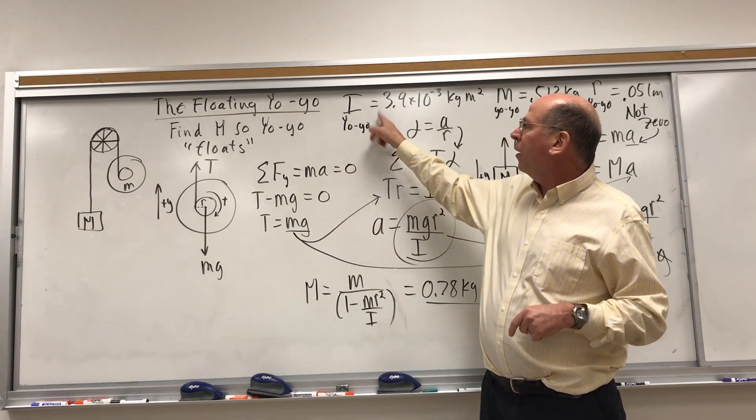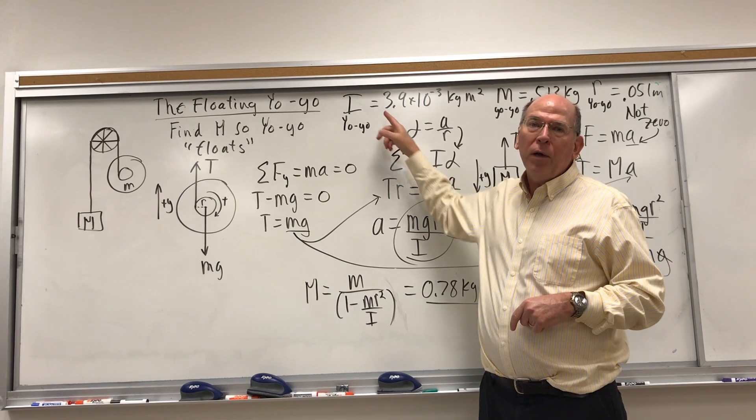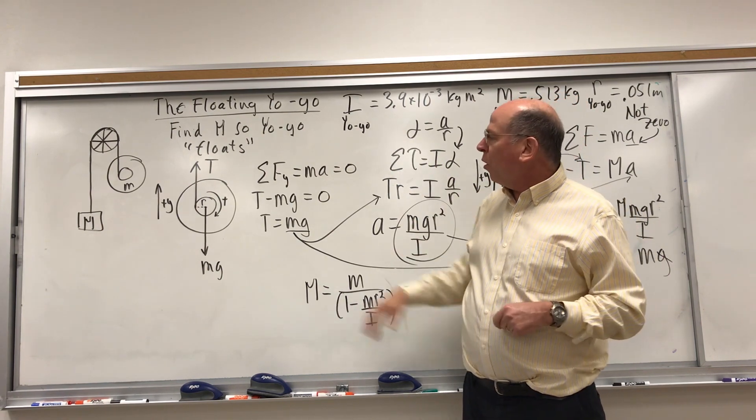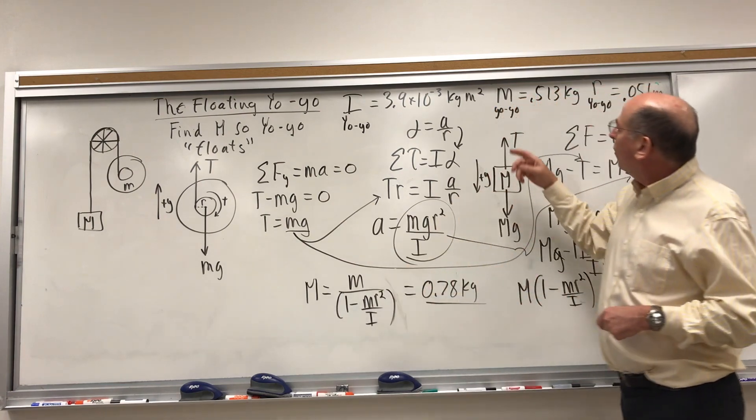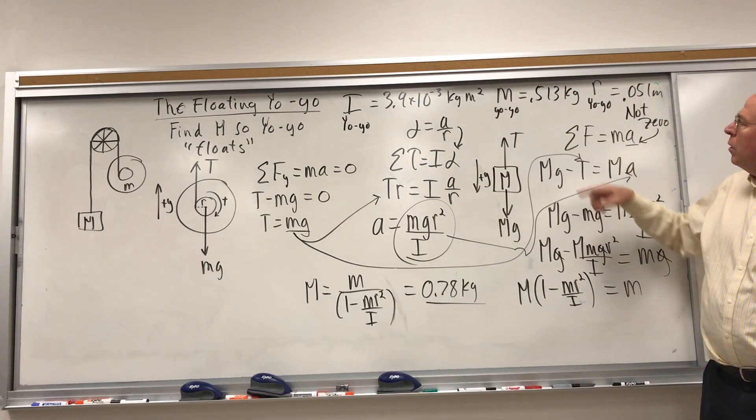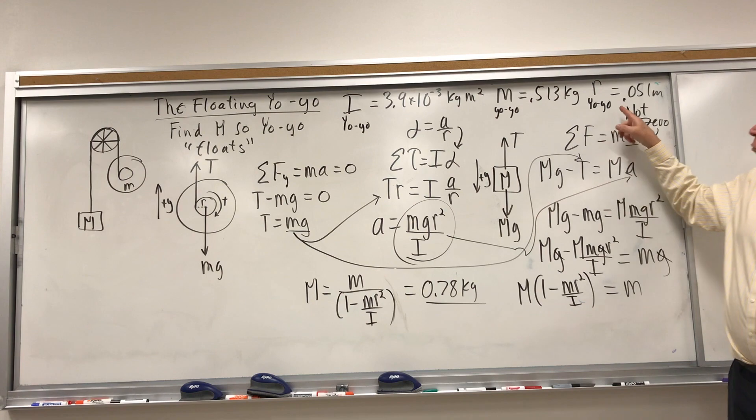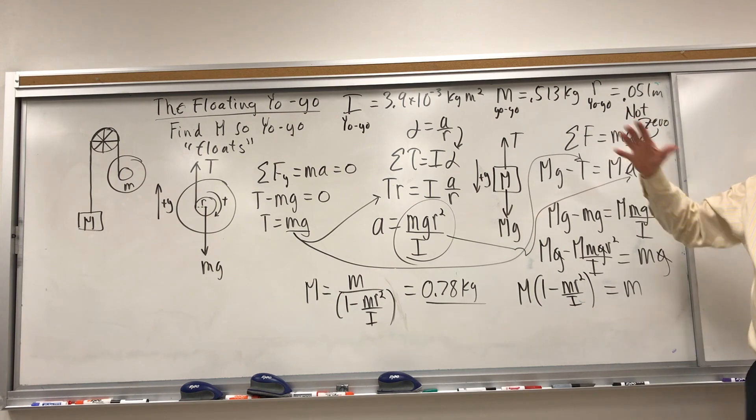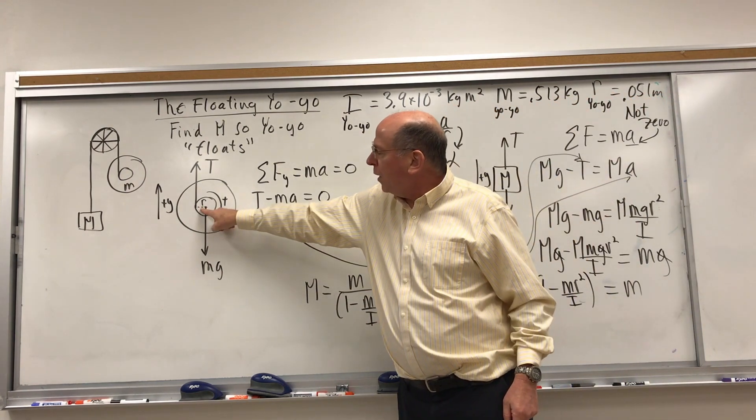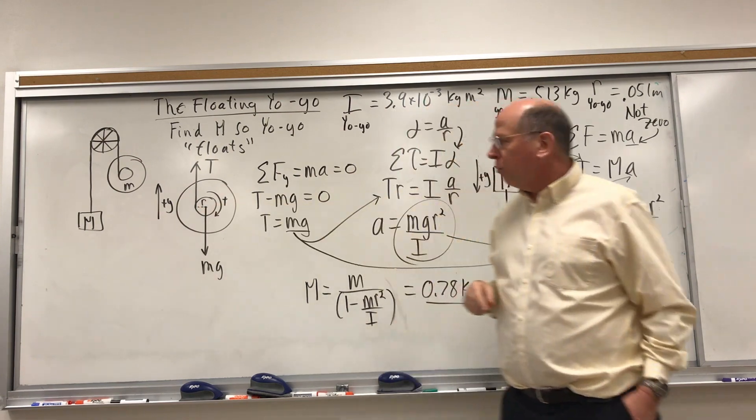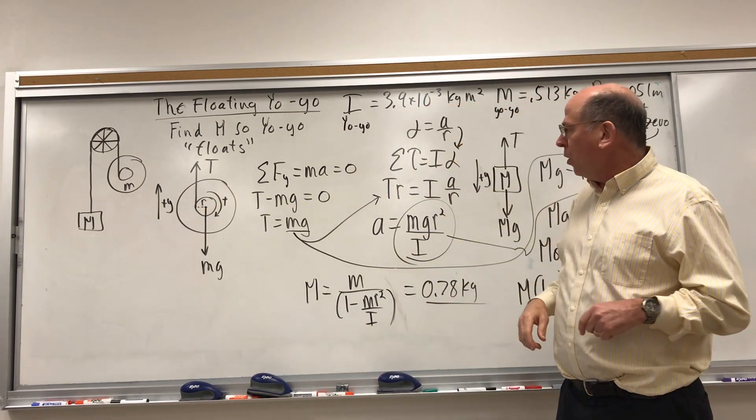Just determining the rotational inertia of the yo-yo could be your unknown—to find what mass makes it float and then solve for I. I think it's more fun to figure out what I is ahead of time on your own and then use it as a given and solve for the unknown mass. We know the mass of the yo-yo, and the radius of the yo-yo is not the whole size of it. It is just the radius of the axle.